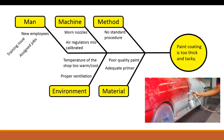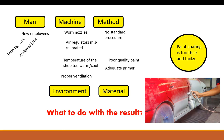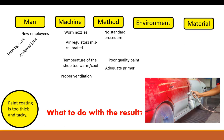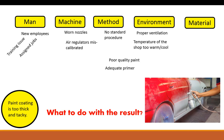Now that we've done the fishbone diagram — a quick, preliminary overview — what do we do with the results? What do we do with all these possible causes and the ultimate effect of having too thick and too tacky paint? Now we start the follow-up. Knowing what the problem is and having the benefit of an organized, systematic, highly visual approach, we can take this information and start actually investigating it.